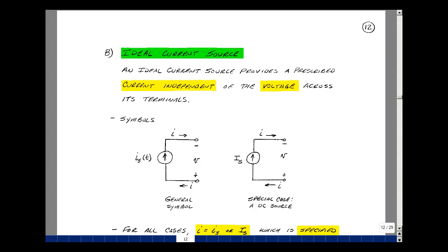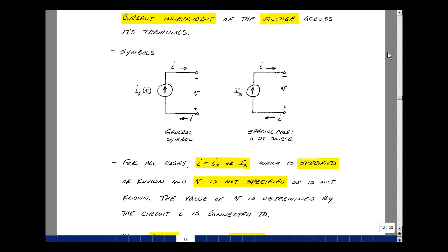Now, if you know that this current is constant with time, we use an uppercase letter with an uppercase subscript. But in all cases, the current is specified or known. The voltage is not specified. It's really an unknown. We'll have to solve for it when we put this in a circuit.